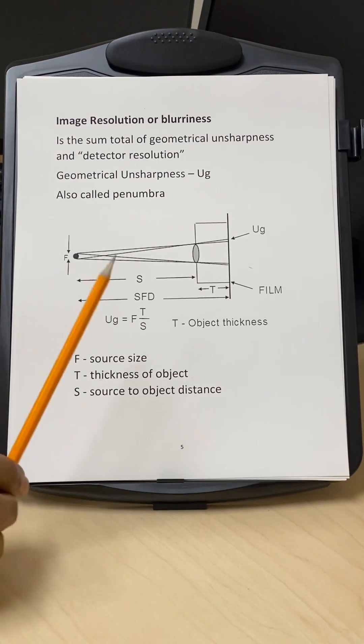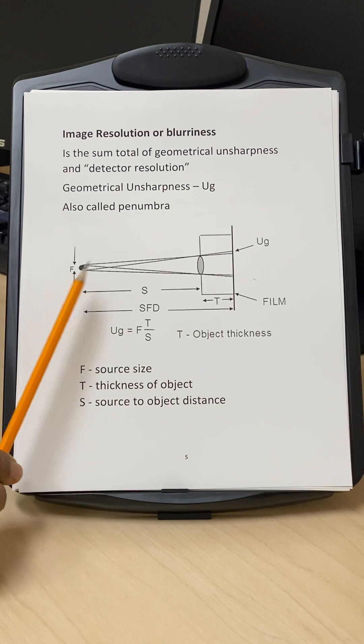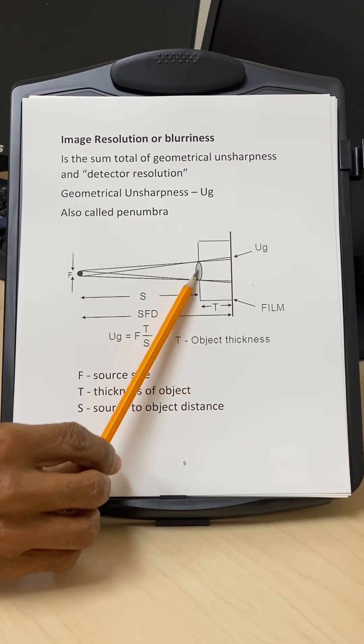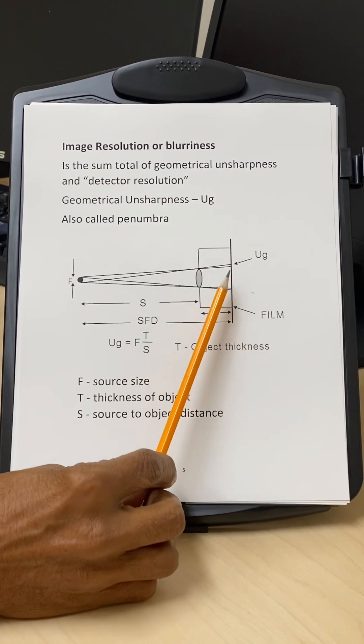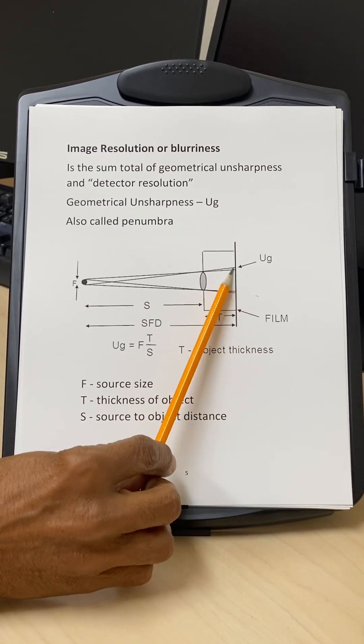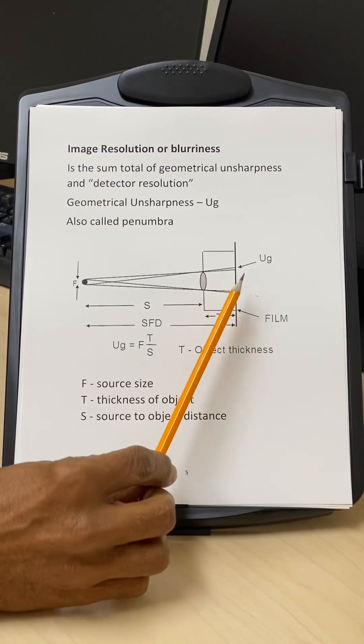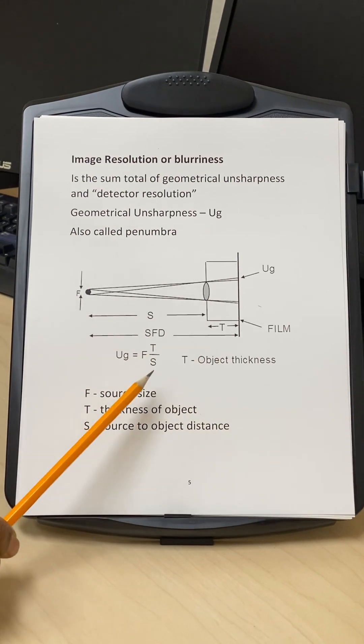So here we have, this is what we traditionally use for film radiography. This is the source. The defect is here basically, which makes a shadow. And we get a dark shadow, which is here, which is the umbra. And this is the gray shadow, which is the penumbra. And this UG, we calculate using the geometrical formula,